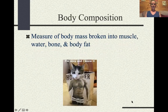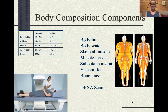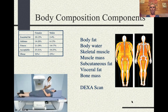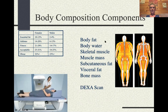Body composition is the measure of the body broken into muscle, water, bone, and body fat. Some of you in exercise science have probably seen the DEXA scan. It shows a picture comparing a larger individual to a smaller individual with different levels of skeletal mass and fat mass.